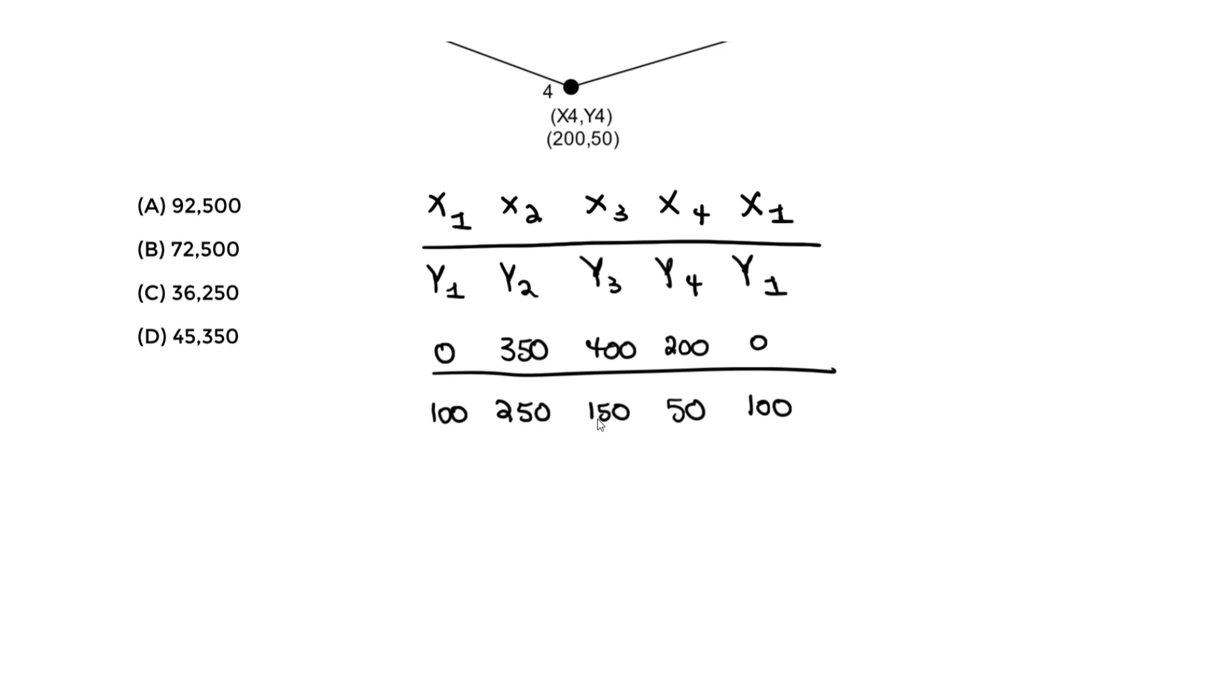Then what I propose is something similar to the cross product. What we do for these questions is essentially the following: we take 0 times 250 minus 100 times 350, then we do plus 350 times 150 minus 250 times 400, then we do plus 400 times 50, and you get the point here. But we'll do it step by step.